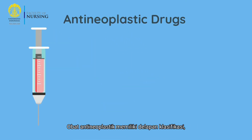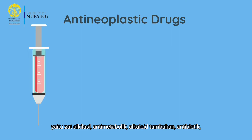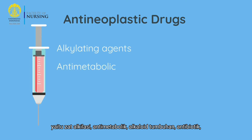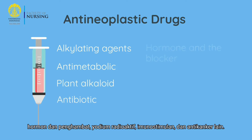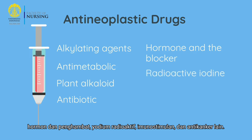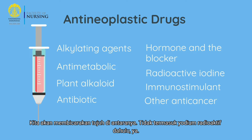Antineoplastic drugs have eight classifications: alkylating agents, anti-metabolics, plant alkaloids, antibiotics, hormones and hormone blockers, radioactive iodine, immunostimulants, and other anticancer drugs. We are going to discuss seven of them, excluding radioactive iodine.